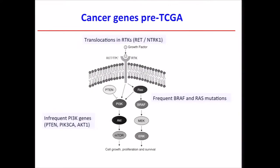Before TCGA, this was the view of genes known to be mutated in papillary carcinoma — mostly BRAF and RAS, but also rearrangements of RET and NTRK1 with infrequent PI3 kinase mutations. That's the foundation from which we started.